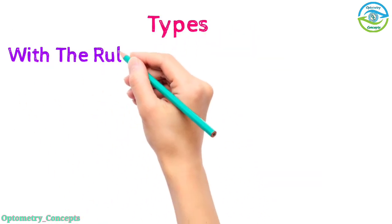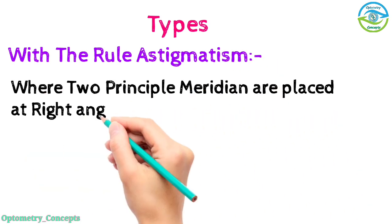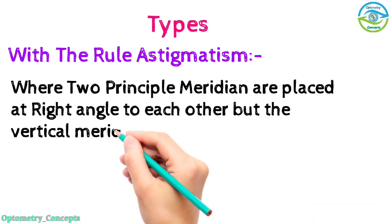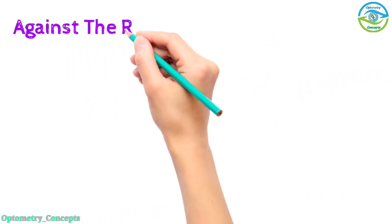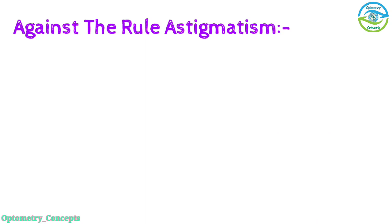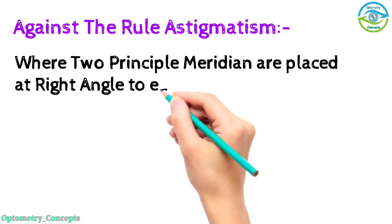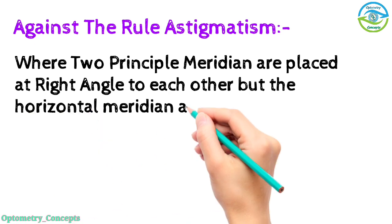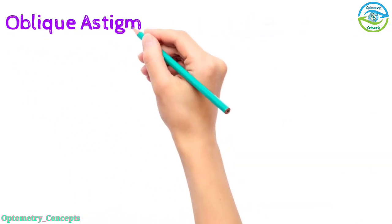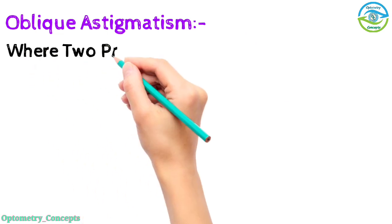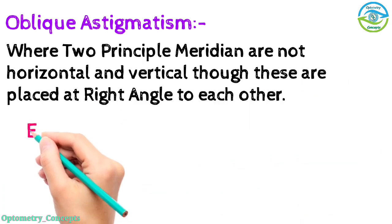Types: with the rule astigmatism - where two principal meridians are placed at right angle to each other, but the vertical meridian are more curved than horizontal. Against the rule astigmatism - where two principal meridians are placed at right angle to each other, but horizontal meridian are more curved than vertical. Oblique astigmatism - where two principal meridians are not horizontal and vertical, though these are placed at right angle to each other.